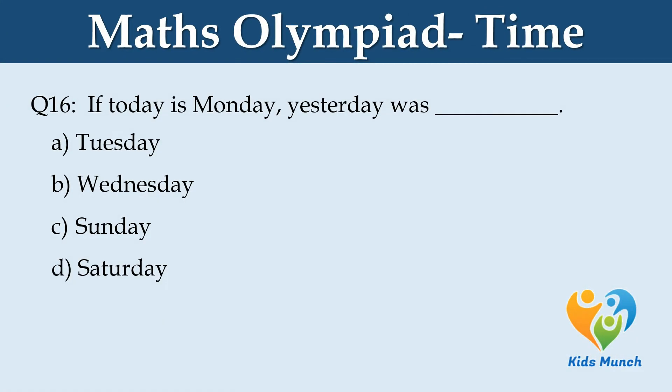If today is Monday, yesterday was dash. Option A: Tuesday. Option B: Wednesday. Option C: Sunday. Option D: Saturday.